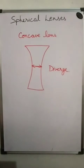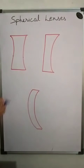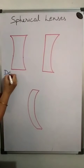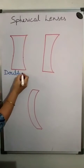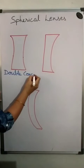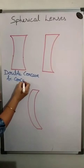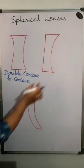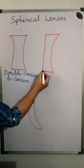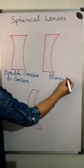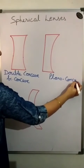We have three types of concave lenses. The first one is concave from both sides, so we call it double-concave or bi-concave. The second type has one plane surface and one concave surface, so we call it plano-concave.